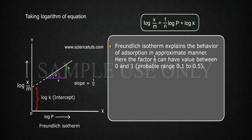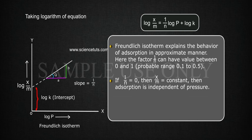Here, the factor 1/N can have value between 0 and 1, probable range 0.1 to 0.5. If 1/N equals 0, then X/M equals constant, and adsorption is independent of pressure.